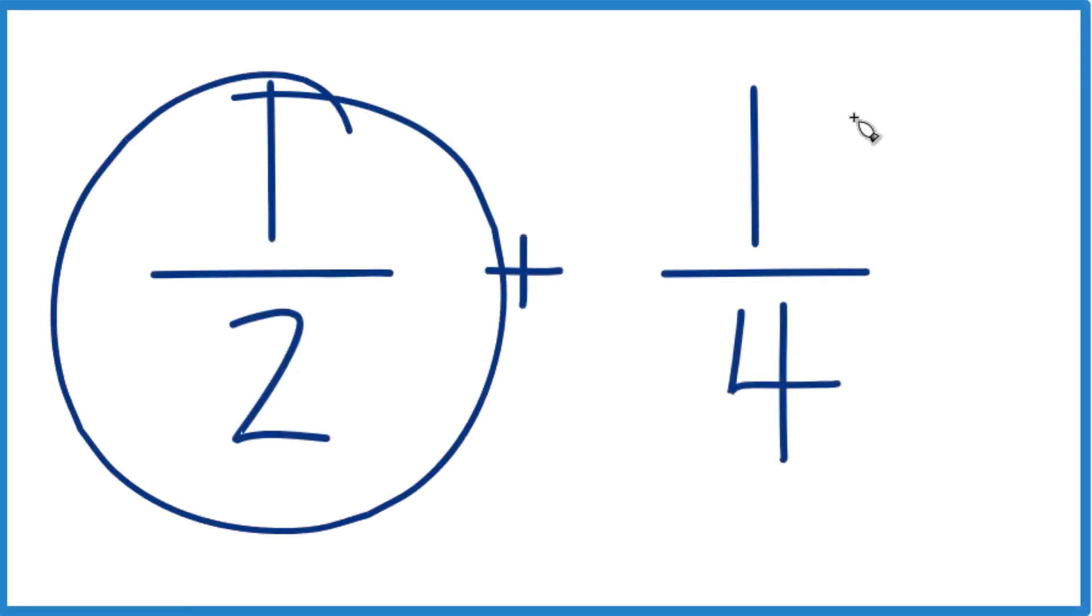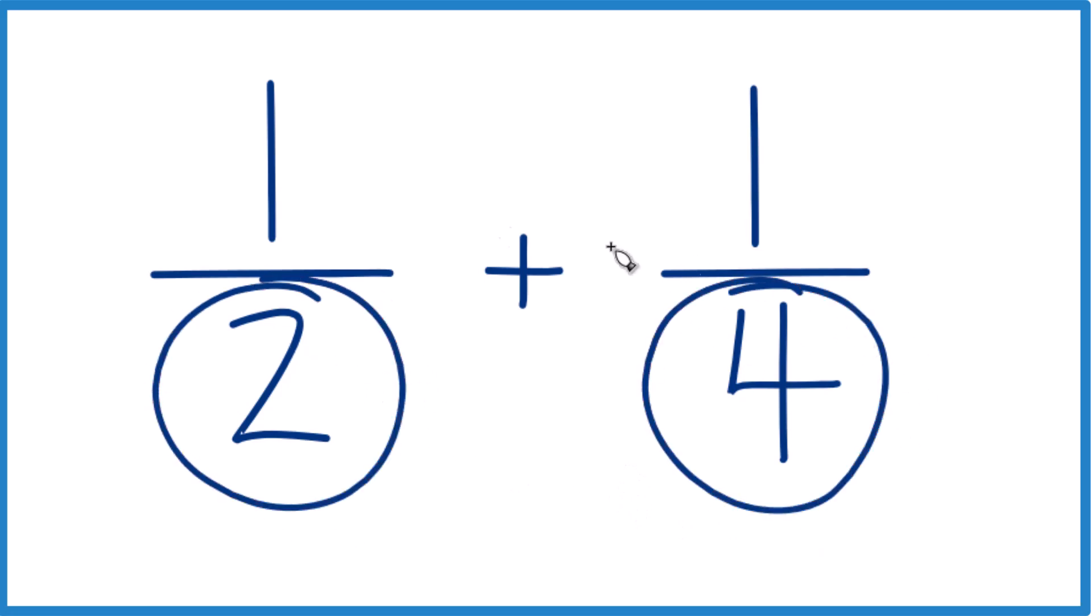Let's add 1 half plus 1 fourth. Here's how you do it. What we need is for the denominators to be the same, because then we'll just add the numerators here, and we'll be done.